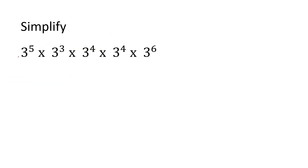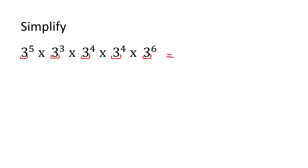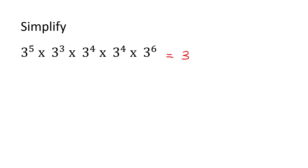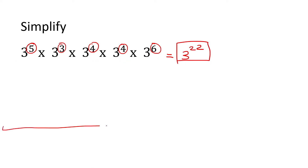Moving on — here we have the number 3. Now here it's going to take you a long time if you still want to expand it. So what we rather do is we realize all of these bases are the same. When the base is the same, leave the base, then add the exponents: 5 plus 3 is 8, 8 plus 4 is 12, 12 plus 4 is 16, 16 plus 6 is 22. So if you went and expanded each of these, you would have had 22 threes next to each other — ain't nobody got time for that.